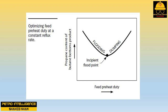This preheater duty corresponds to the incipient flood point. The optimum feed preheater duty maximizes fractionation at a fixed reflux rate. Varying the heat content of the feed is an additional independent variable that an operator can use to optimize fractionation efficiency. An additional benefit of feed preheat is that a lower temperature heat source can be used — if valuable 100 psig steam is required for the reboiler, then low-value 26 psig steam might be adequate for the feed preheat exchanger.